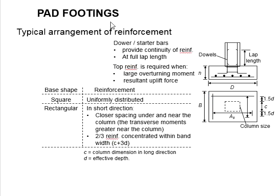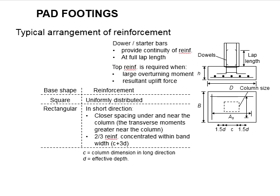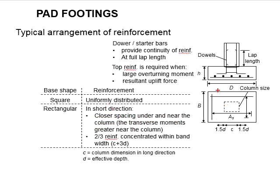For the rectangular section in the shorter span, the reinforcement is designed to withstand the moment caused by the bearing pressures of the soil and also to tie the spacing of the longitudinal reinforcement bar. For a base which is square in section, the reinforcements are normally uniformly distributed. However, for a pad footing with a rectangular base, the reinforcement bars in the short direction are normally closely spaced under and near the columns, which is in these regions.